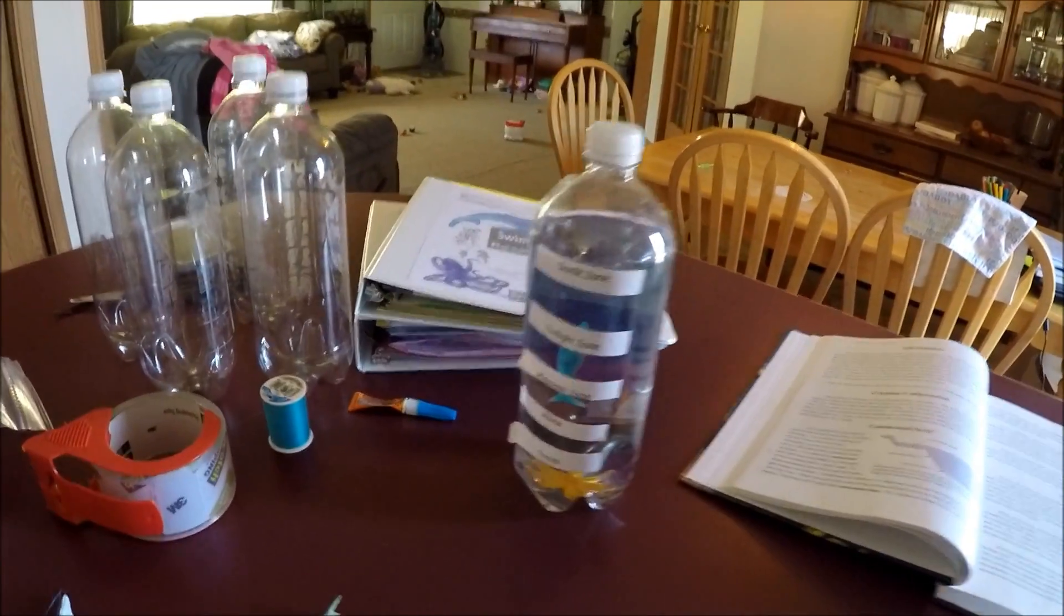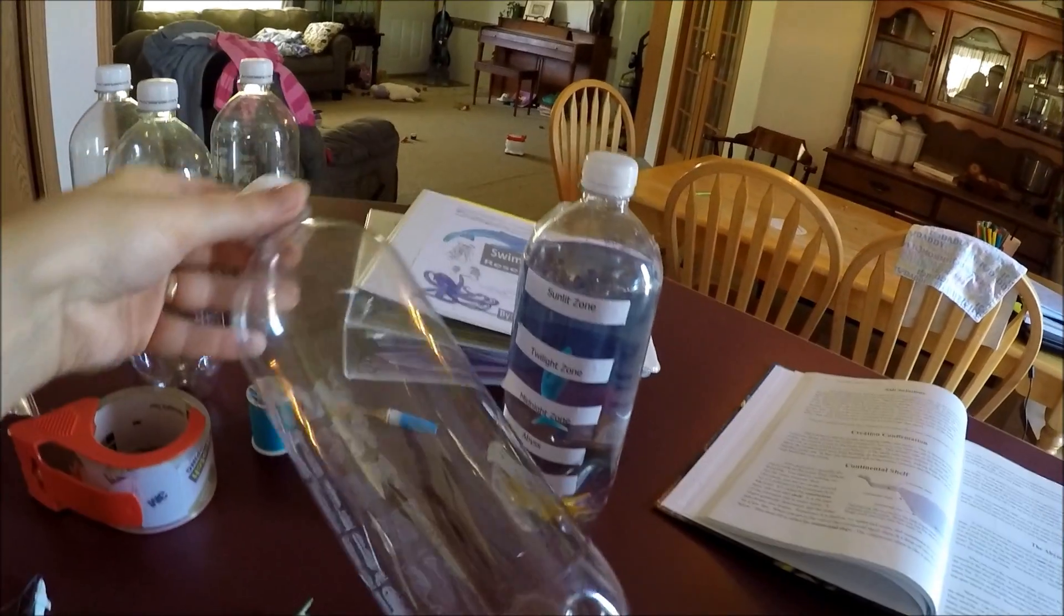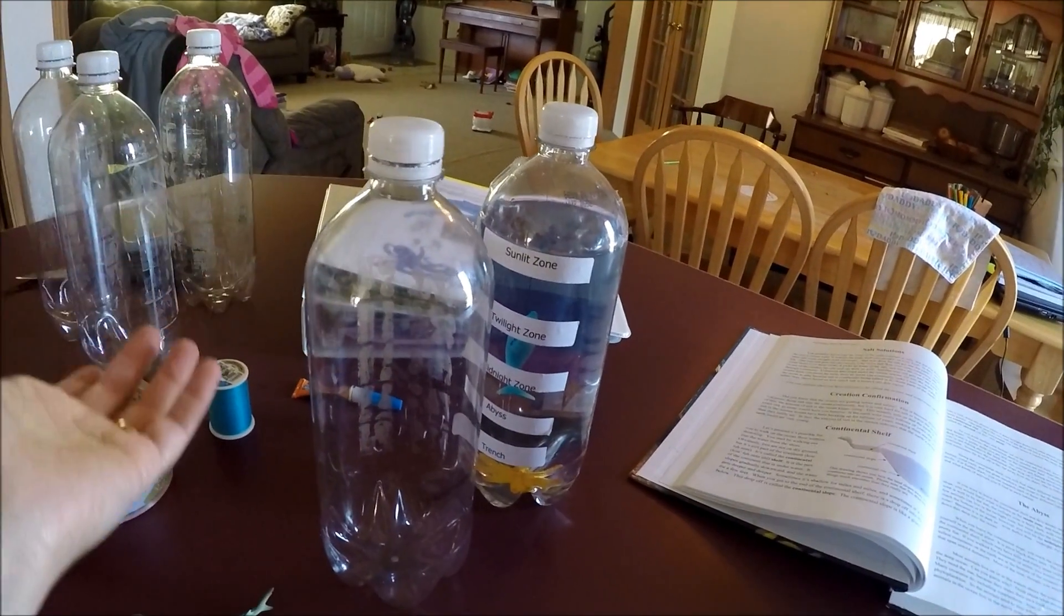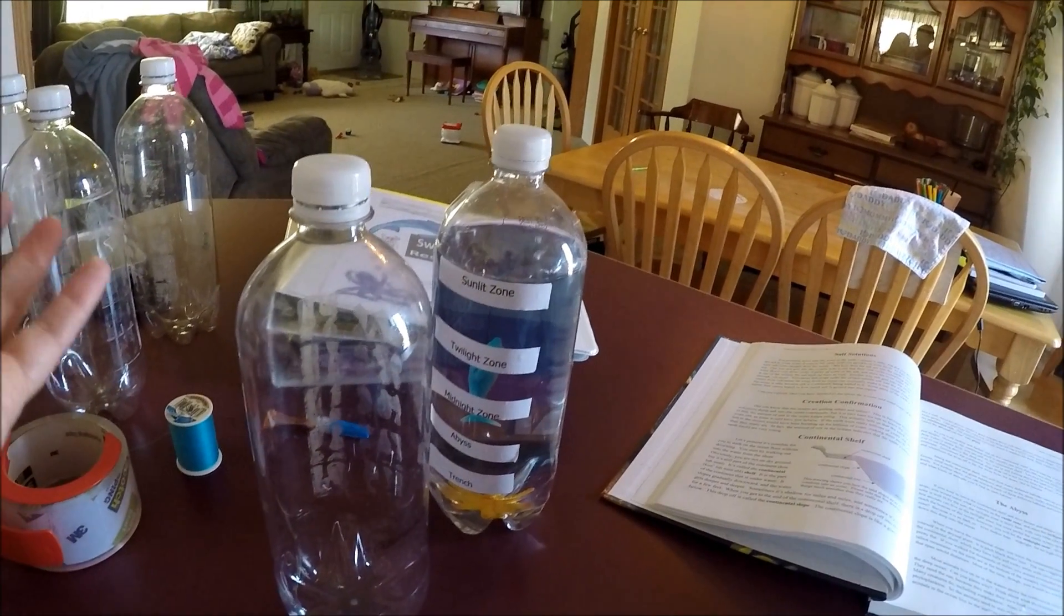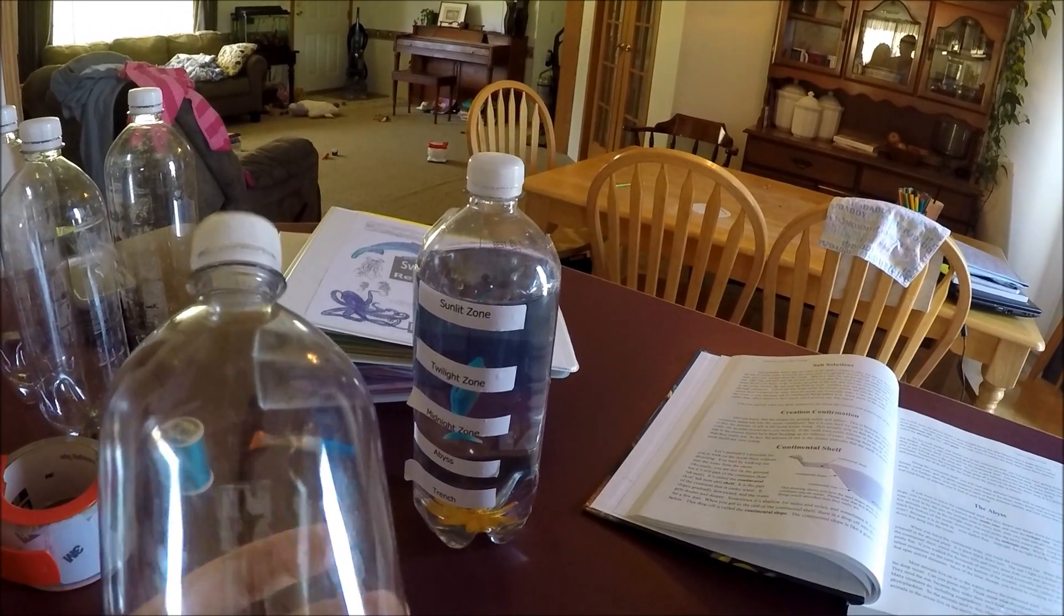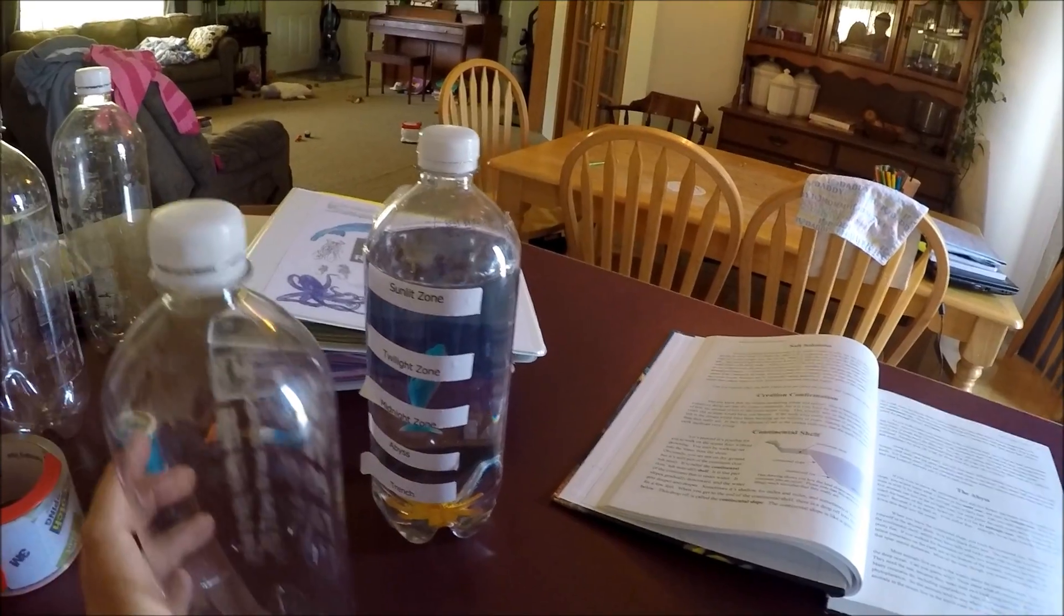The supplies you'll need to make your ocean zone bottle are plastic bottles. These are from flavored water bottles at Walmart. They're a little bigger than a normal water bottle and smaller than a two-liter bottle. They're thicker and sturdier, so they don't crinkle, and they're nice and smooth for our stickers.